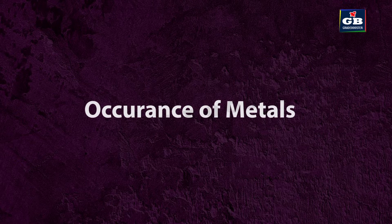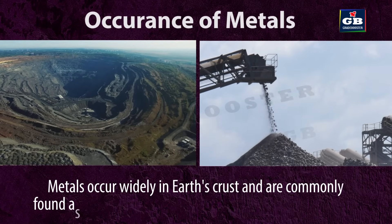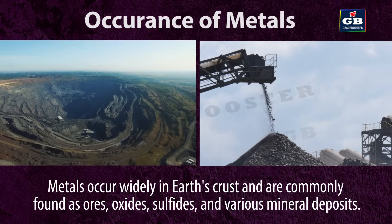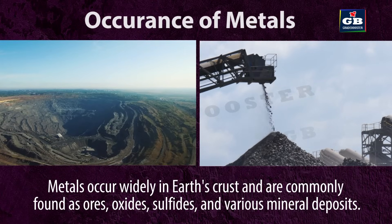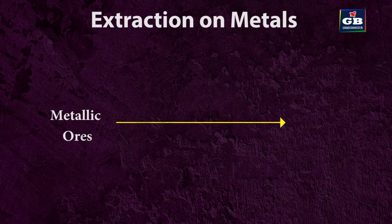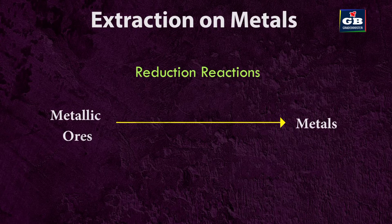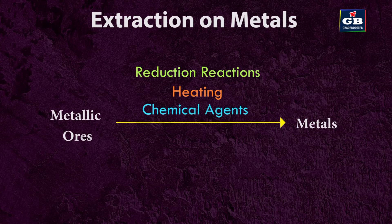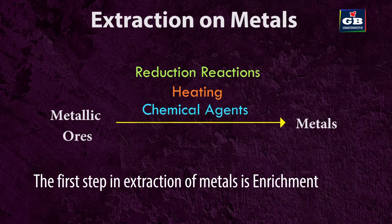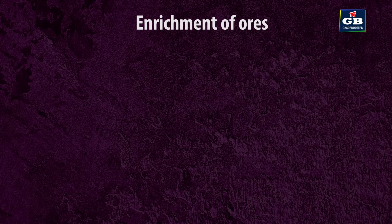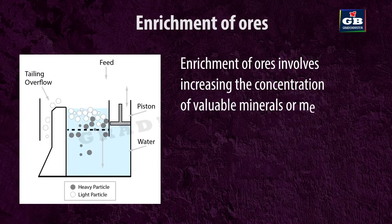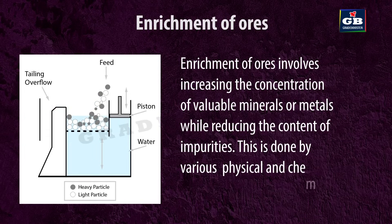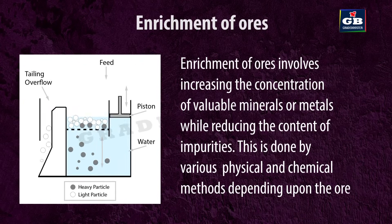Occurrence of metals: Metals occur widely in the Earth's crust and are commonly found as ores, oxides, sulfides and various mineral deposits. Extraction of metals: Metals are extracted from their ores through processes involving reduction reactions, often utilizing heat and chemical agents to obtain the desired metal in purified form. The first step in extraction is enrichment of ores, which involves increasing the concentration of valuable minerals or metals while reducing the content of impurities, using various physical and chemical methods.